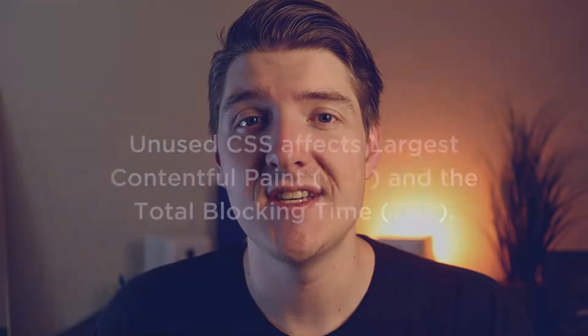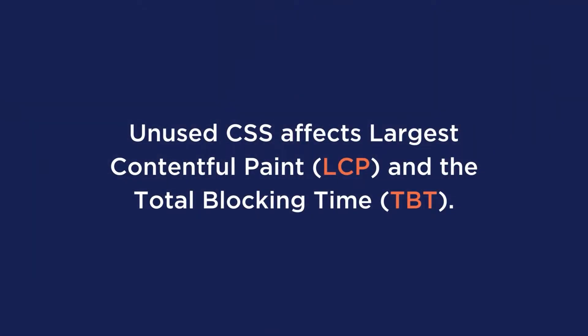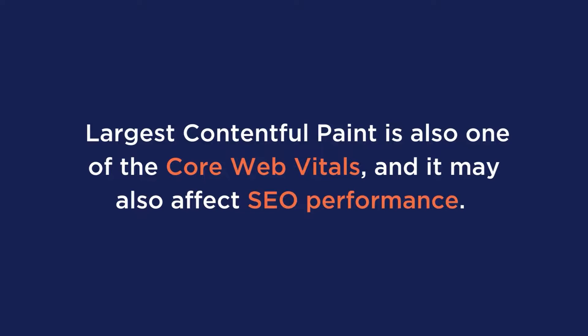Unused CSS also affects specific metrics such as Largest Contentful Paint and Total Blocking Time. Largest Contentful Paint is one of the Core Web Vitals and it may also affect SEO performance.